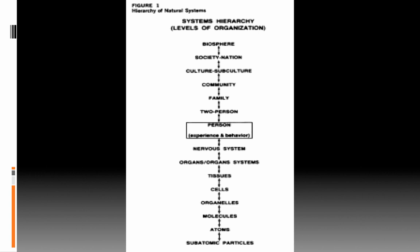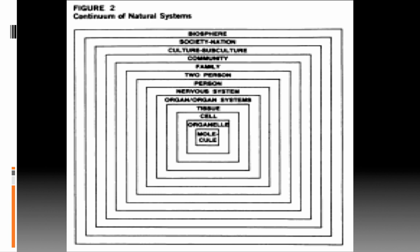What you see in the middle of the figure is the person. Everything below a person in this model are things integral or inside of a person: nervous systems, organs, tissues, cells, organelles. Everything above that are things outside of the person. The smallest social unit would be two people interacting, moving up to families, communities, whole cultures or subcultures, societies and nations, and all the way up to the biosphere. There are many different levels of unit of analysis.